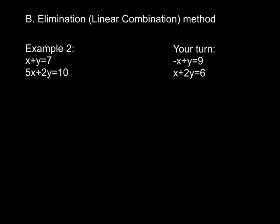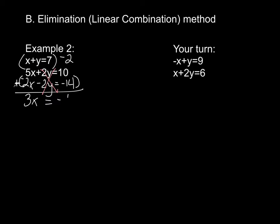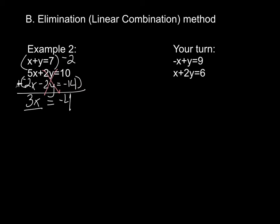Let's multiply the top equation by negative 2, since I prefer smaller numbers. That gives negative 2x minus 2y equals negative 14. Now adding the two equations together: 5x minus 2x is 3x, and the y terms cancel. We get 3x equals negative 4. Dividing by 3, x equals negative 4 thirds.